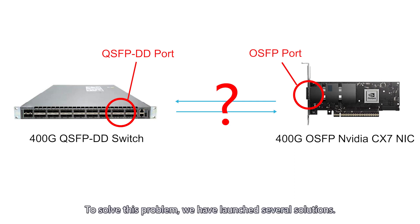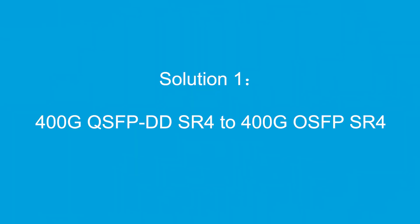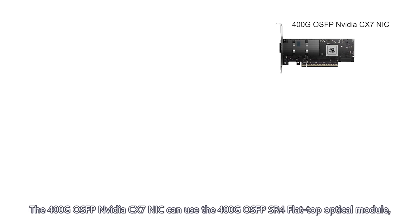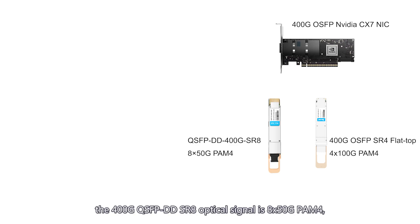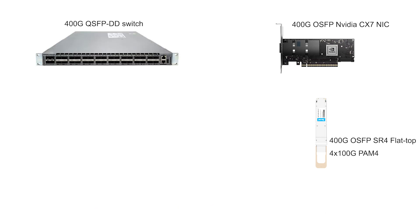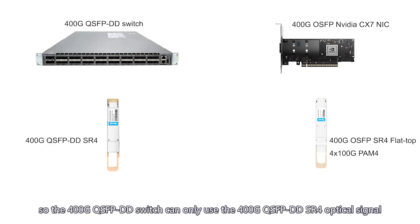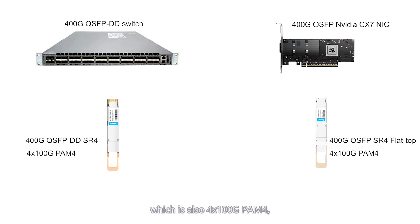To solve this problem, we have launched several solutions. The 400G OSFP NVIDIA CX7 NIC can use the 400G OSFP SR4 flat top optical module, with an optical signal of 4x100G PAM4. The 400G QSFPDD switch can only use the 400G QSFPDD SR4 optical module, which also uses 4x100G PAM4 signals.